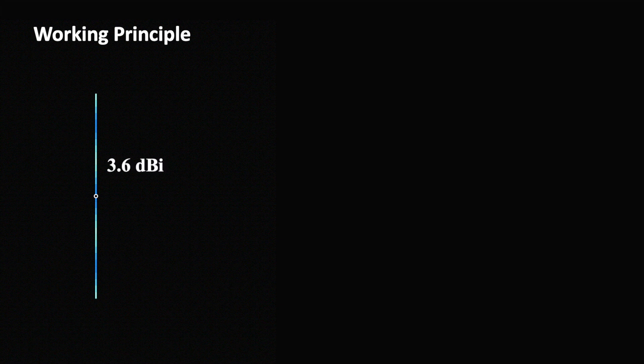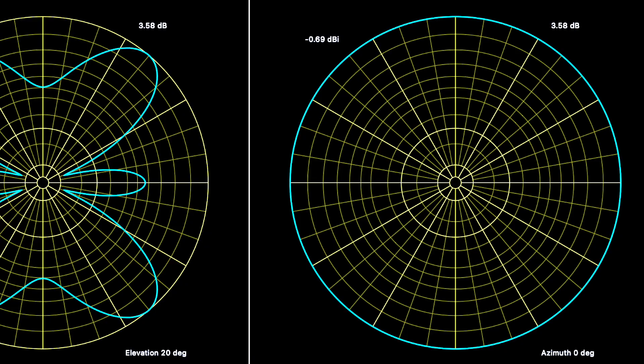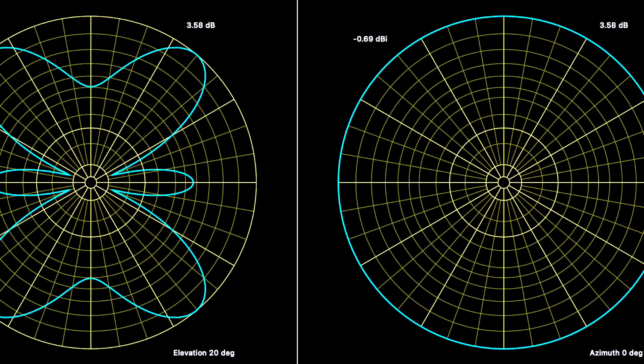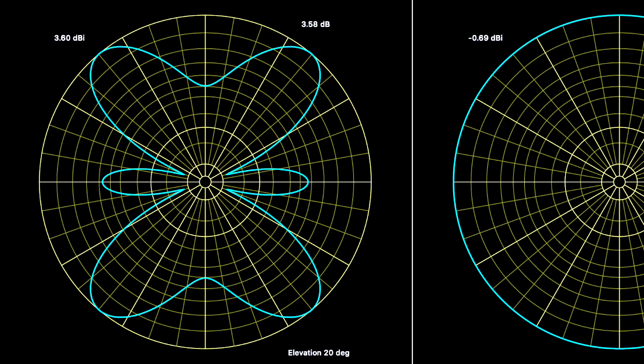This gives us a radiation pattern like the one of a phased array. We get several main lobes with a directivity of 3.6 dBi maximum. Could we combine them into one main radiation lobe?